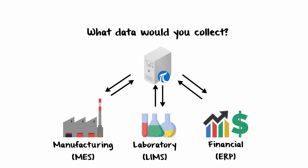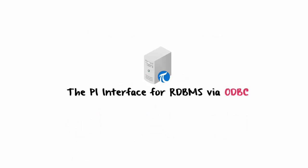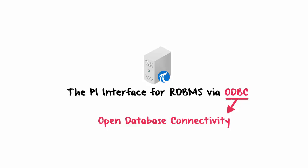So how does a single PI Interface collect data from all these systems? As we mentioned, the PI Interface can collect data from any RDBMS with an ODBC driver. ODBC stands for Open Database Connectivity — this is simply a standard way of communicating with database management systems. An ODBC driver is just a software component that does the talking, and this driver needs to be installed on the computer where you will be installing the PI Interface for RDBMS.